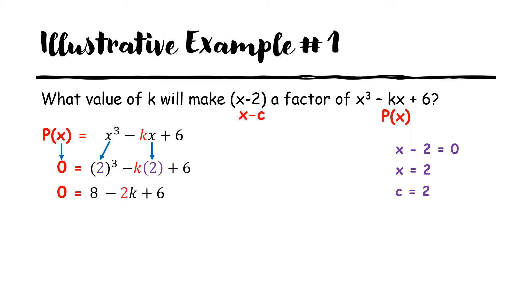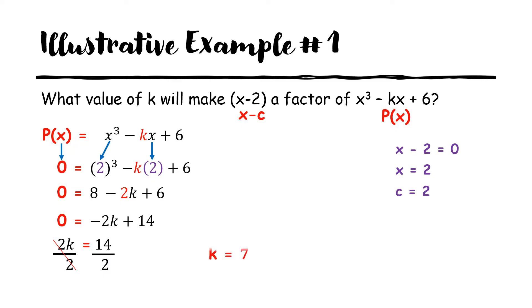Now we work out the equation: 0 equals 2³ minus 2k plus 6, which gives us 0 equals 8 minus 2k plus 6. Combining like terms: 0 equals negative 2k plus 14. So 2k equals 14, and dividing both sides by 2, k equals 7. Therefore k should be 7 so that x minus 2 is a factor of x³ minus kx plus 6.